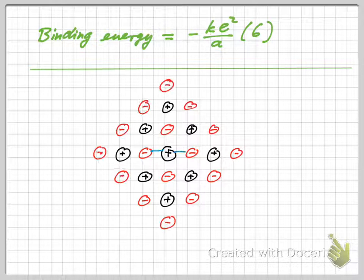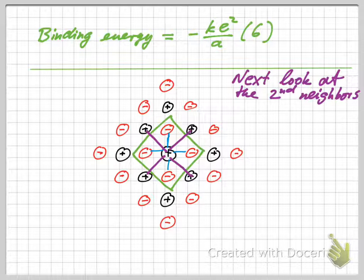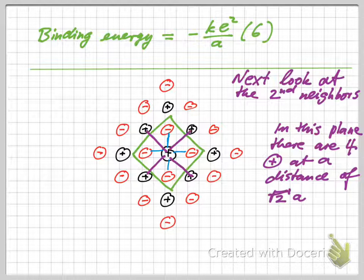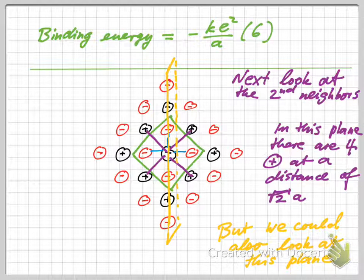But we can keep going here. We have that, but next we would have to look at the second nearest neighbors. Those are the positive ions shown here. There's four of them that I show in this plane. They are at a distance of square root of two times a, sort of that diagonal. But we could also look at this plane, the perpendicular plane, and the picture would be identical to what I'm showing already here.